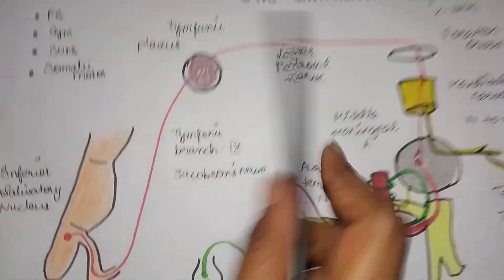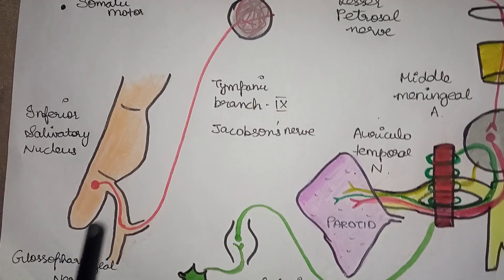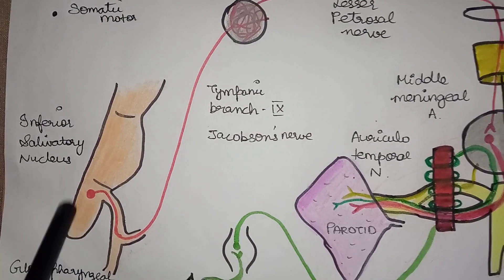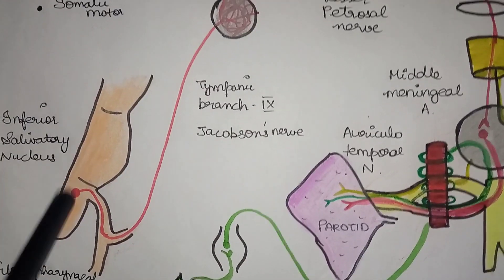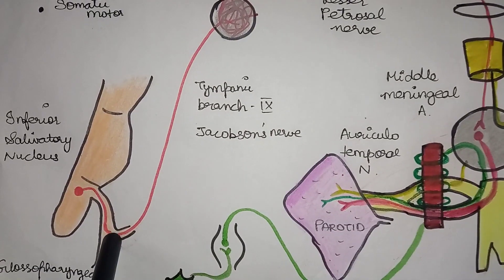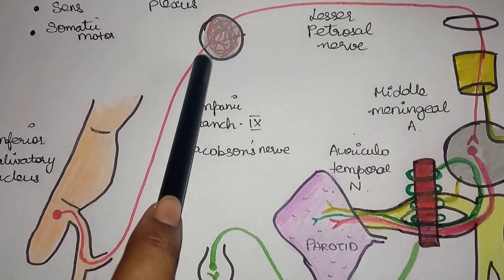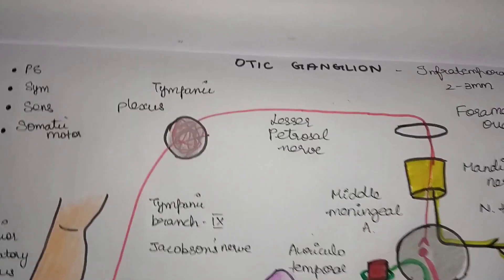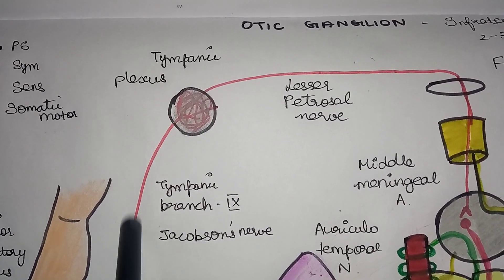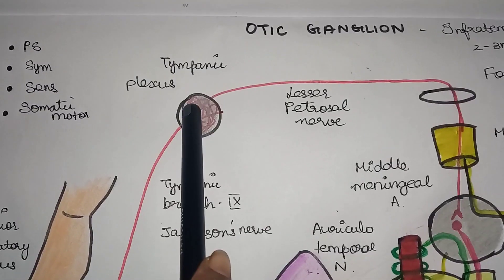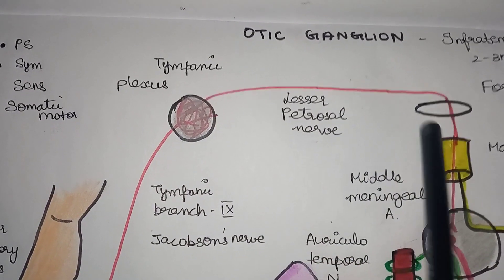The otic ganglion has a parasympathetic root. The parasympathetic root arises from the inferior salivatory nucleus in the medulla. From the inferior salivatory nucleus, the glossopharyngeal nerve arises. The tympanic branch of the glossopharyngeal nerve — also called Jacobson's nerve — forms the tympanic plexus. From the tympanic plexus, the lesser petrosal nerve is formed, which enters the cranium.